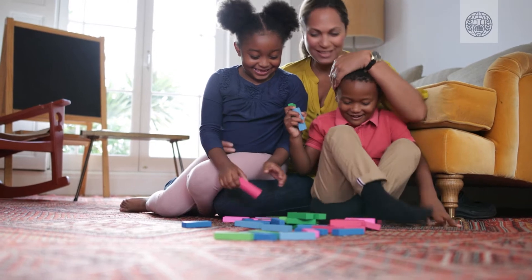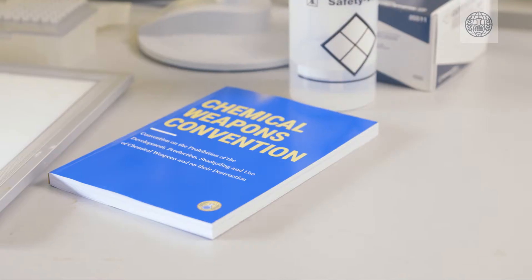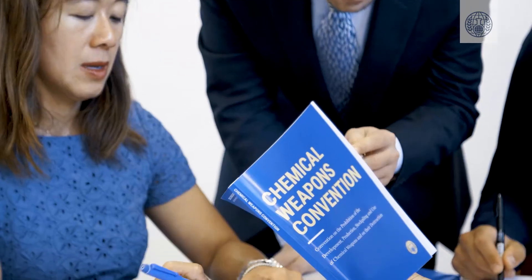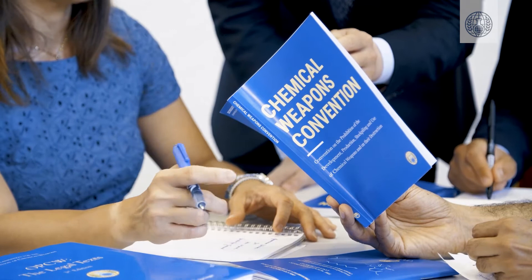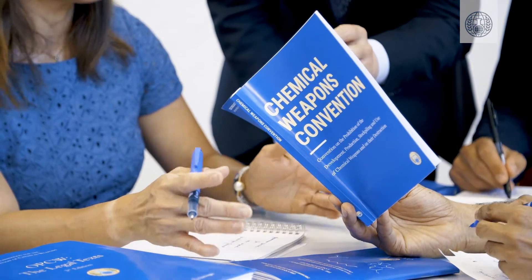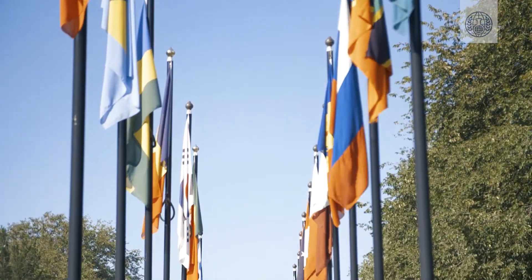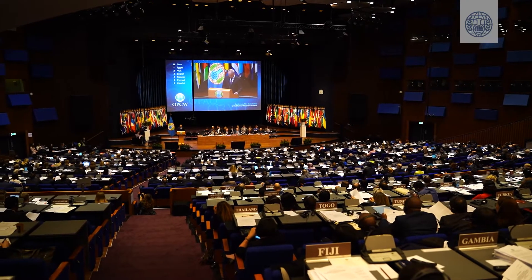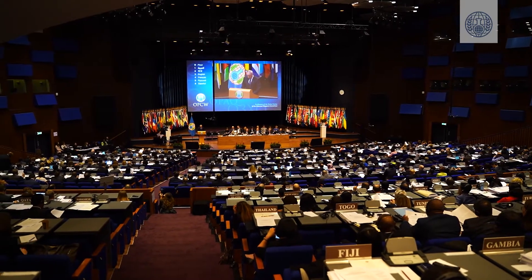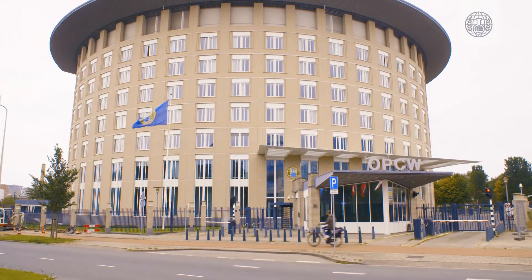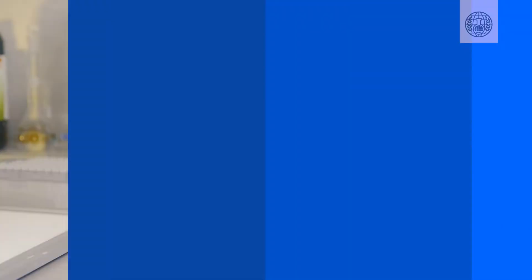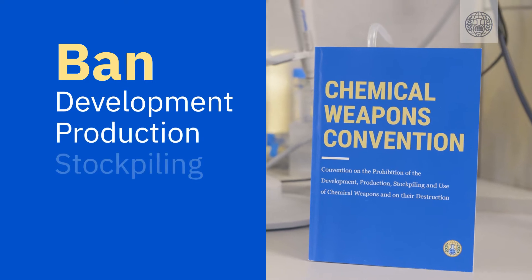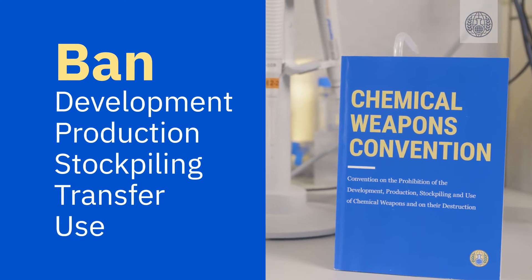So how can we live safely with dual-use chemicals? This is where the Chemical Weapons Convention comes in. The Chemical Weapons Convention is an international treaty dedicated to a world free of chemical weapons. 193 countries have signed and ratified the Convention. They are working together as member states of the Organization for the Prohibition of Chemical Weapons, the OPCW, to implement it. The Chemical Weapons Convention bans the development, production, stockpiling, transfer and use of chemical weapons.